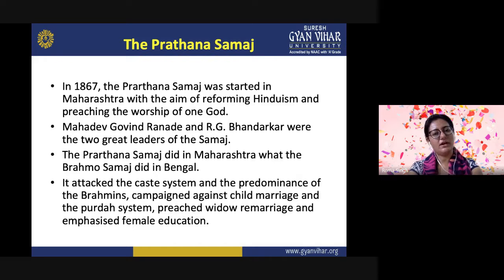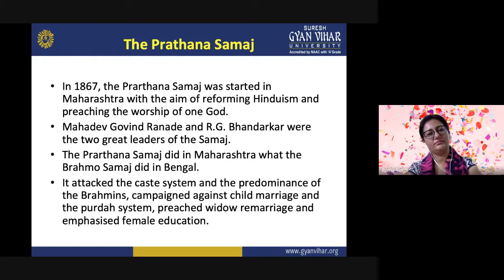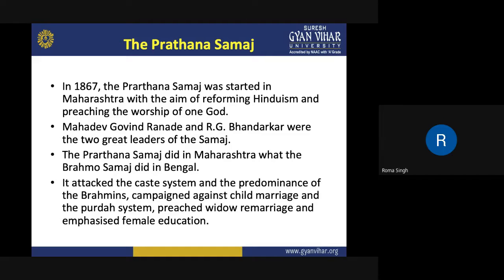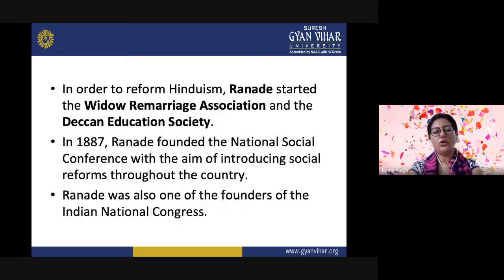In 1867, the Prarthana Samaj was started in Maharashtra with the aim of reforming Hinduism and preaching the worship of one God. Mahadev Govind Ranade and R. G. Bhandarkar were the two great leaders of the Samaj. The Prarthana Samaj did in Maharashtra what the Brahma Samaj did in Bengal. It attacked the caste system and the predominance of Brahmins, campaigned against child marriage and the parda system, preached widow remarriage, and emphasized female education. All these societies formed by various reformers worked for doing away with social evils and the caste system that was harming Indian society in order to reform Hinduism.